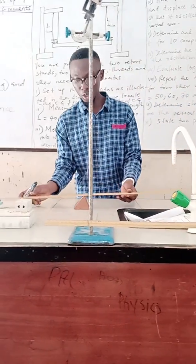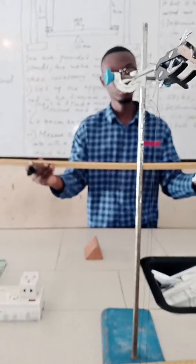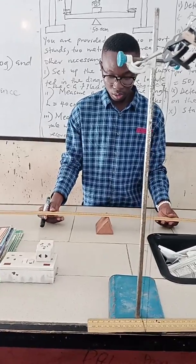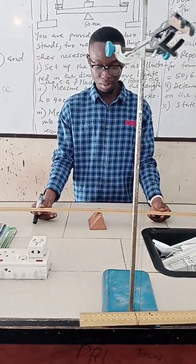Of course we know that this is the meter rule, and it will balance exactly at the 50 cm mark. So the center of gravity is noted to be 50 cm. So we take that, we note that.